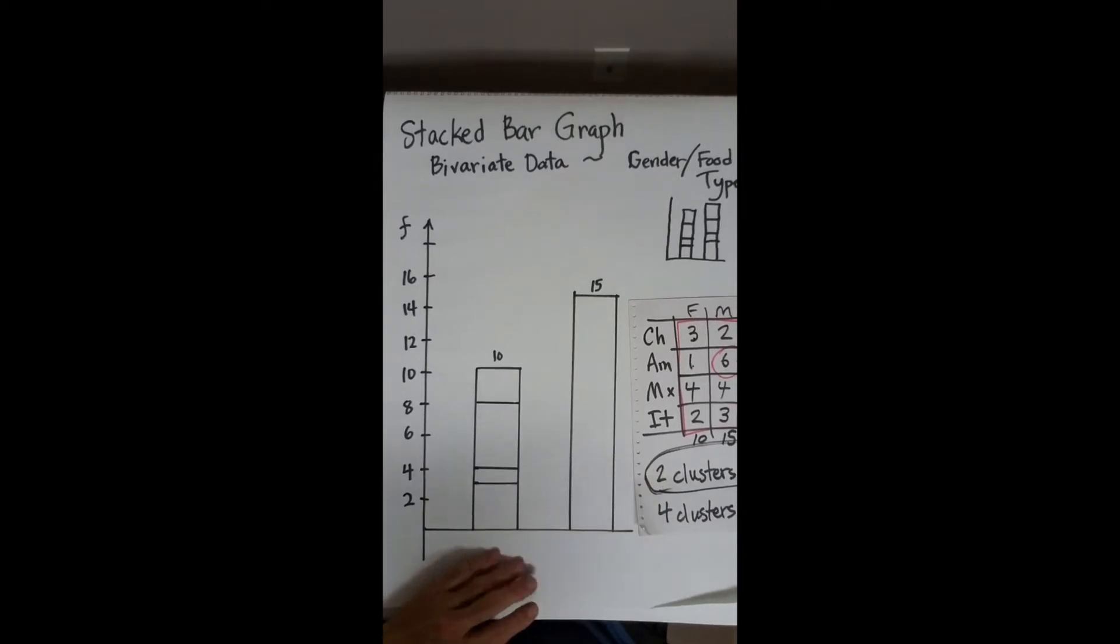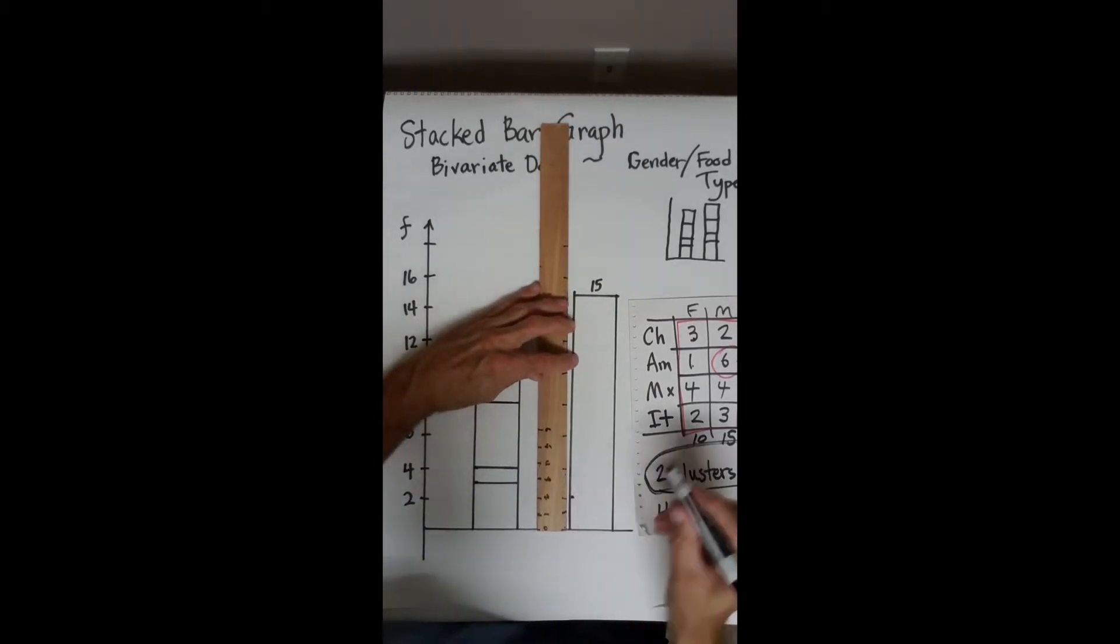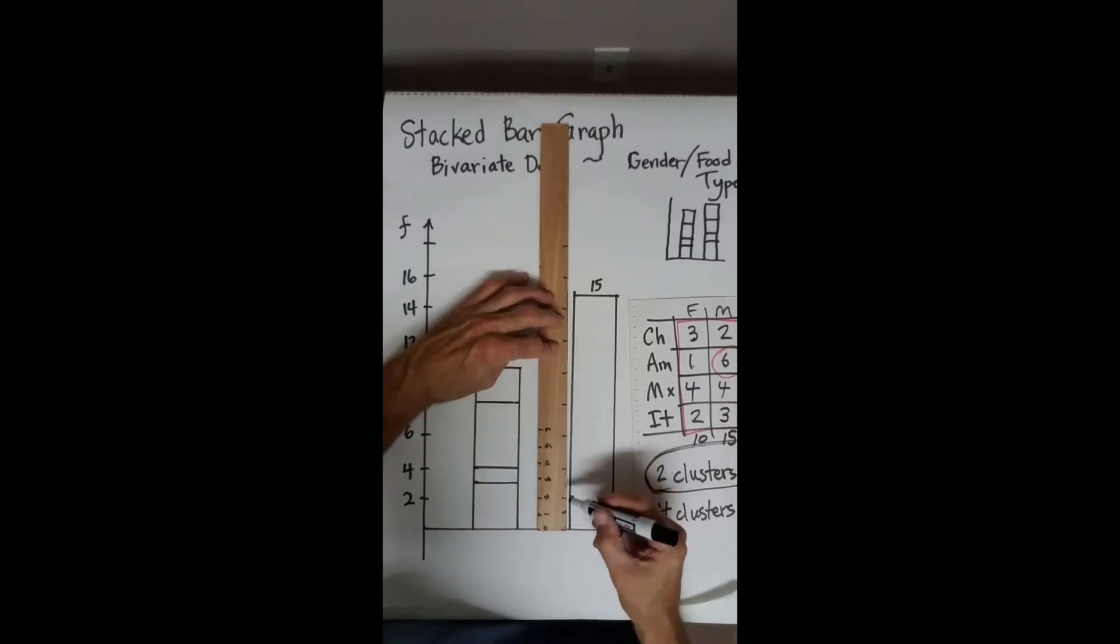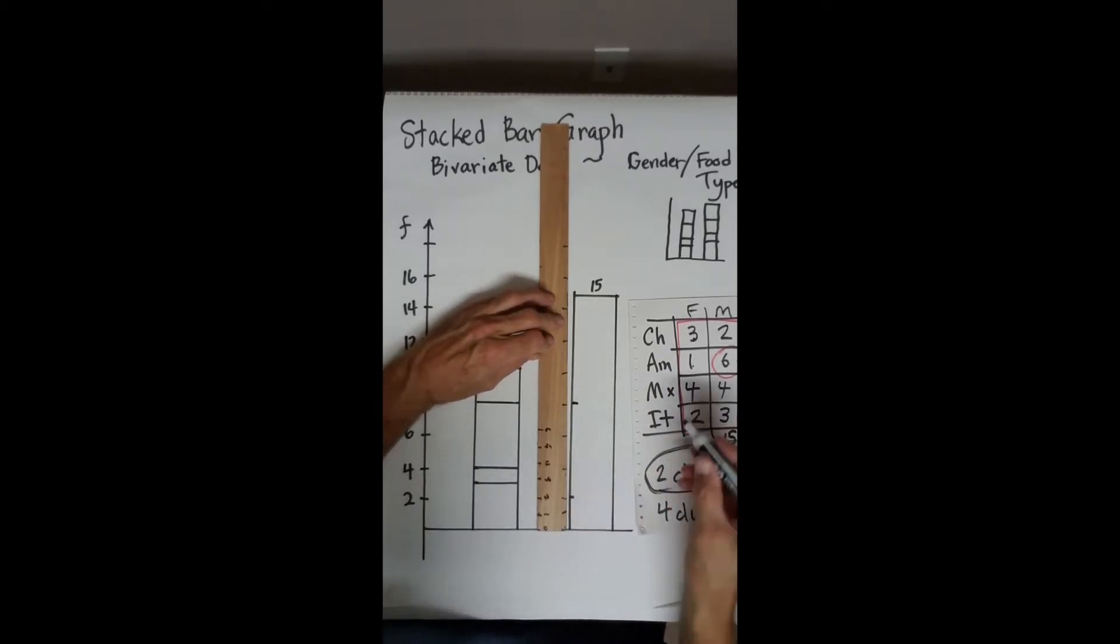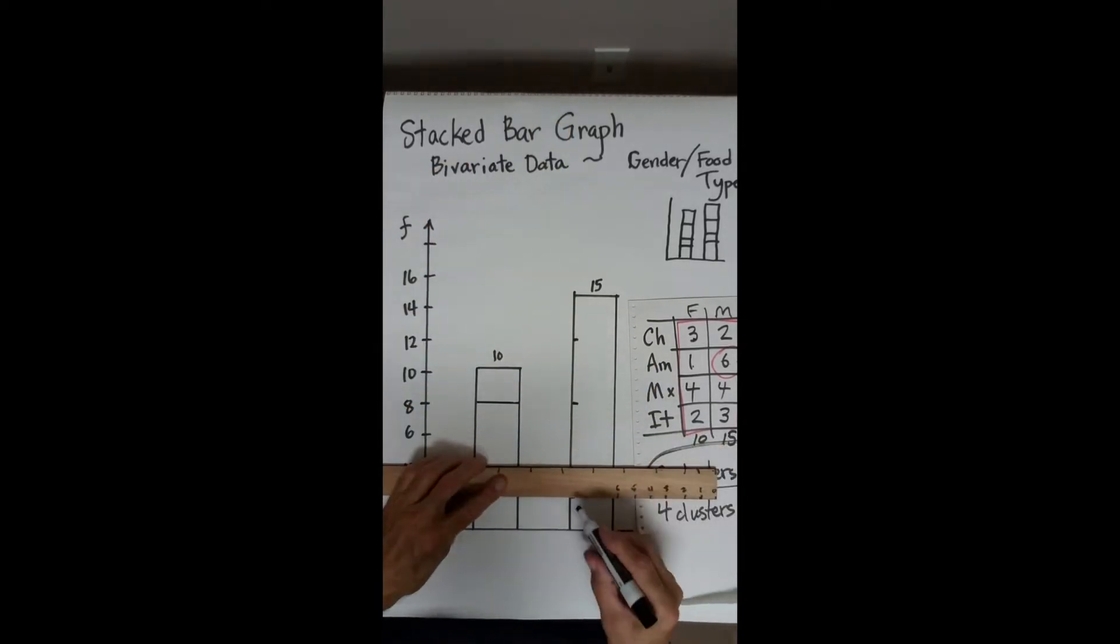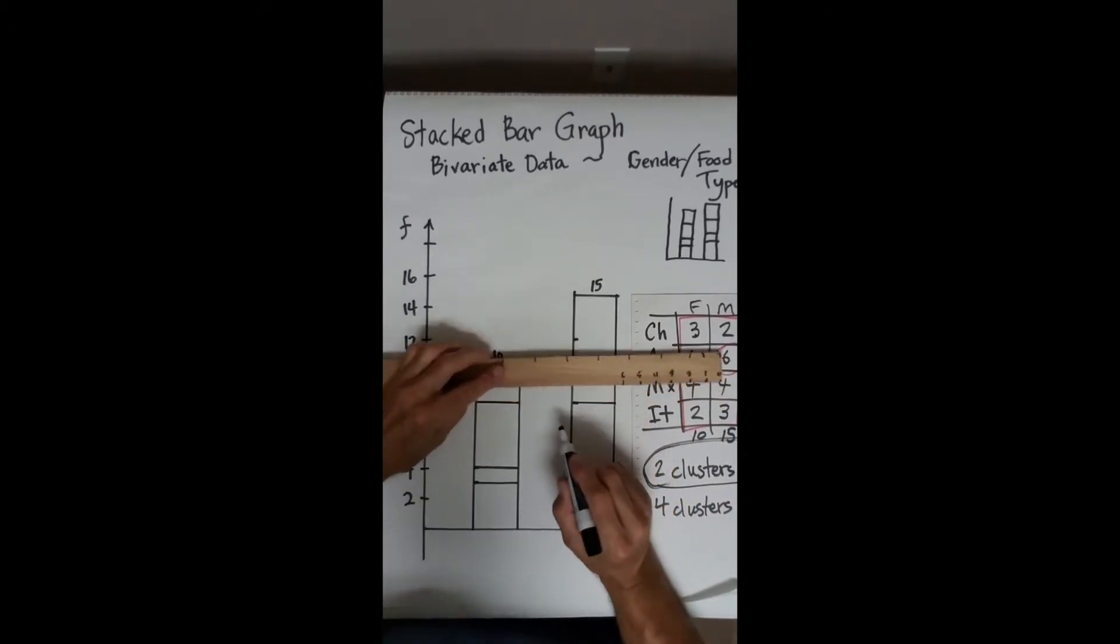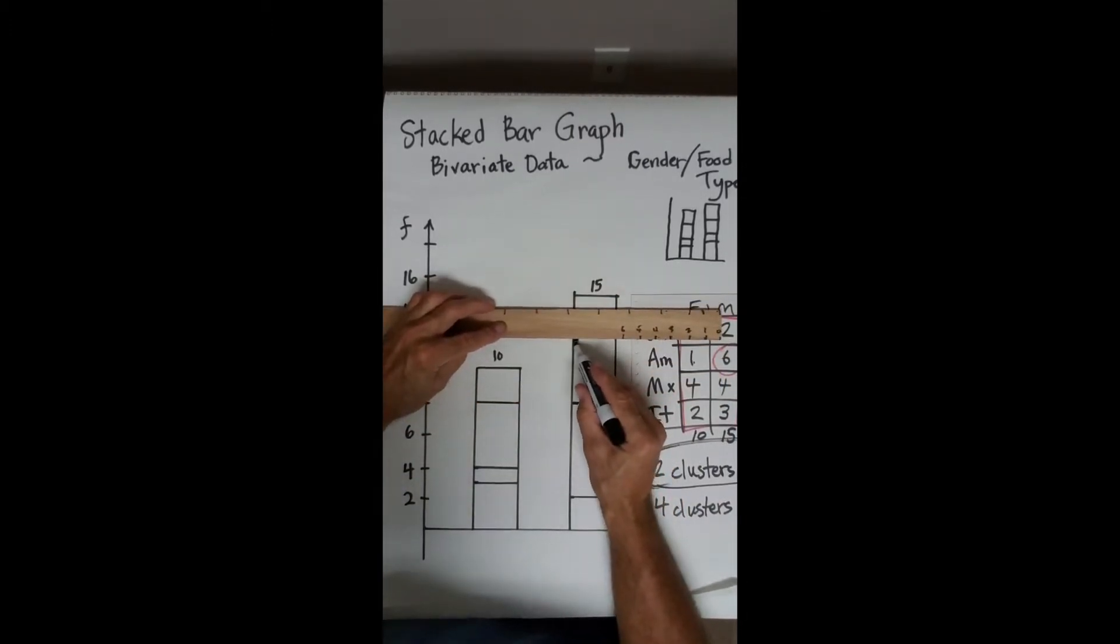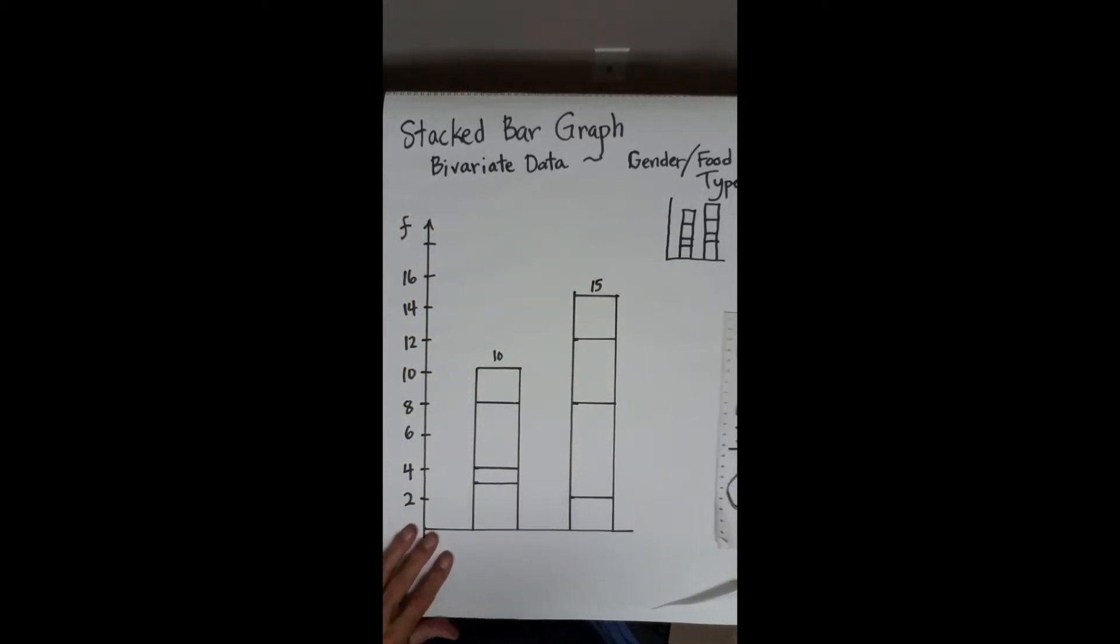For males, there were 2 who liked Chinese. And then 2 and 6 would make it a total of 8, 2, 4, 6, 8. And then 4 more. So that leaves 2 Chinese, 6 American, 4 Mexican, and 3 Italian.